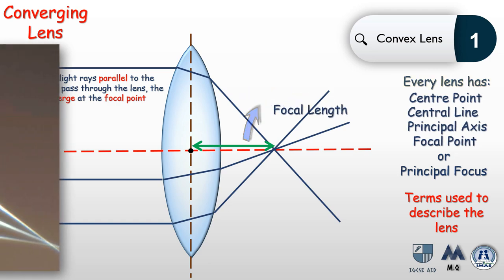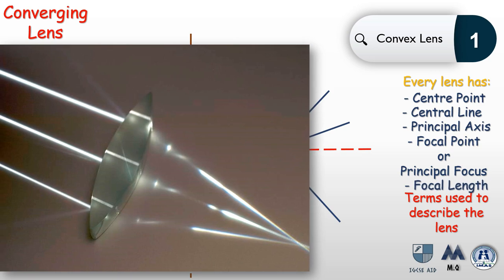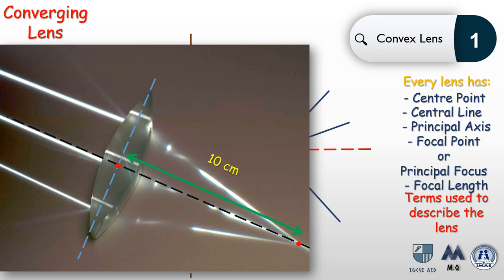Look at the following lens and identify the elements we just discussed. Here you have the center point; passing through it is the central line, and perpendicular to it — through the center point — is the principal axis. The rays shown are parallel to the principal axis, so the point where they converge is the focal point. The distance between the center line and the focal point is the focal length, which in this case is 10 centimeters.